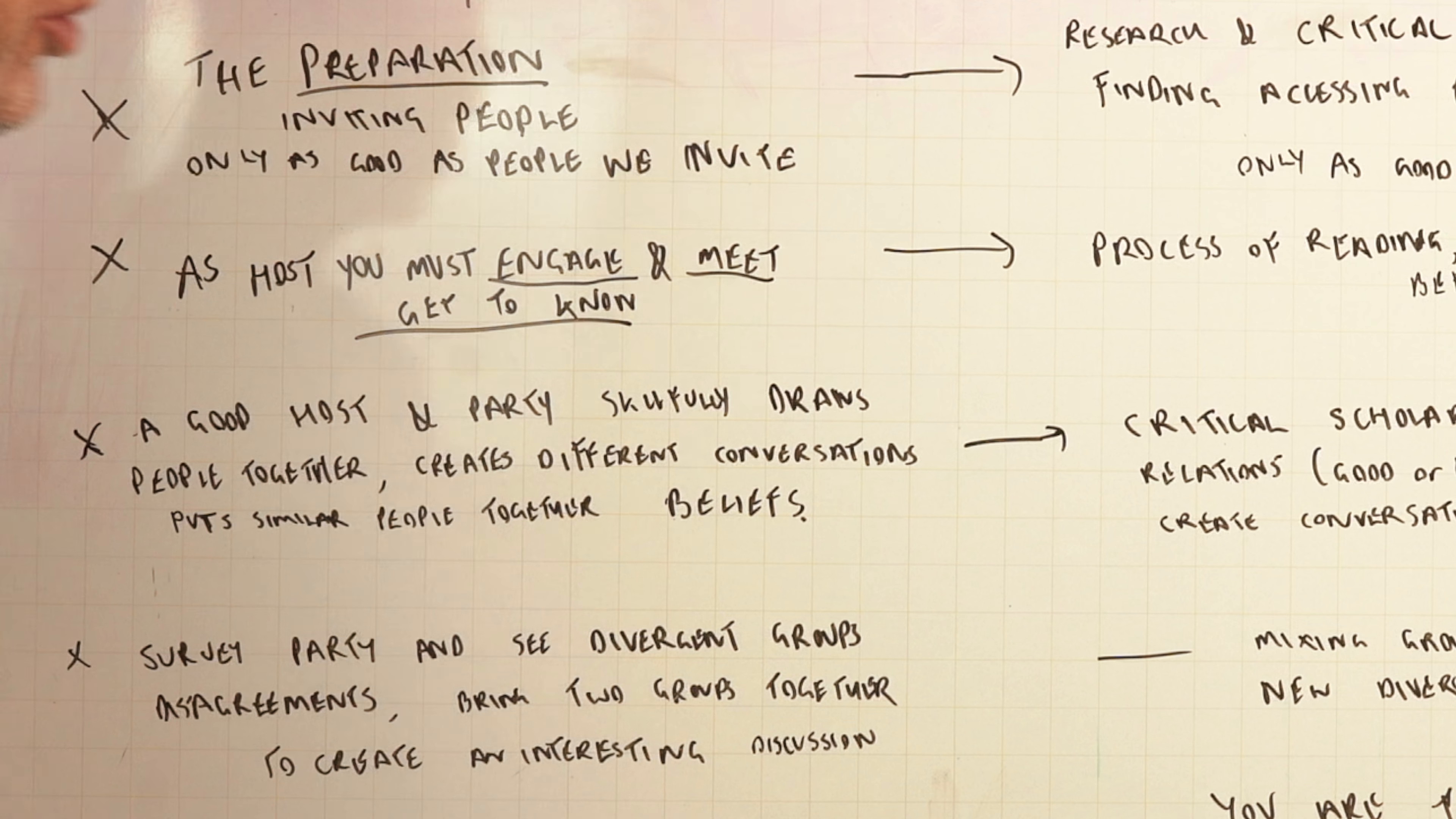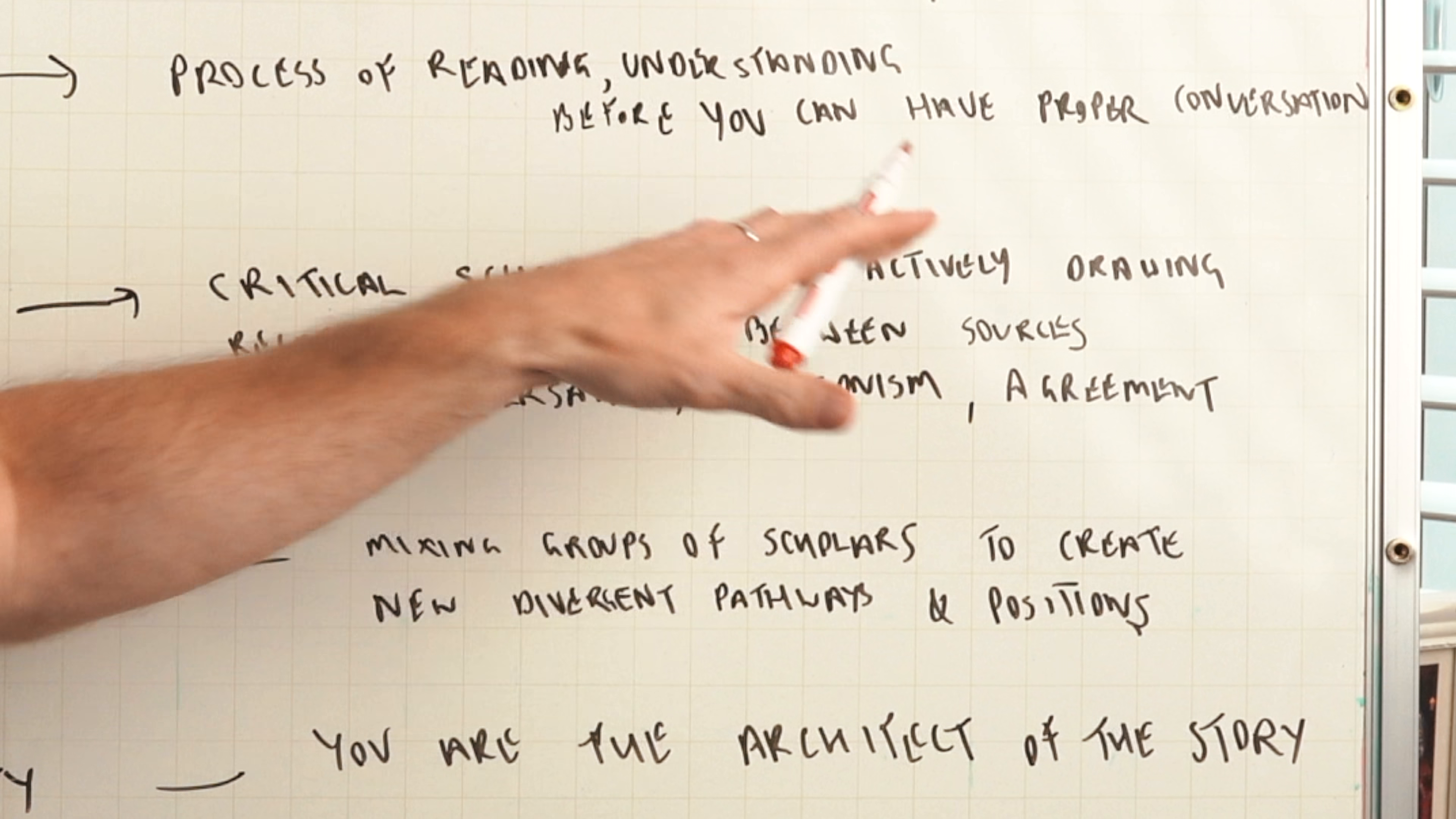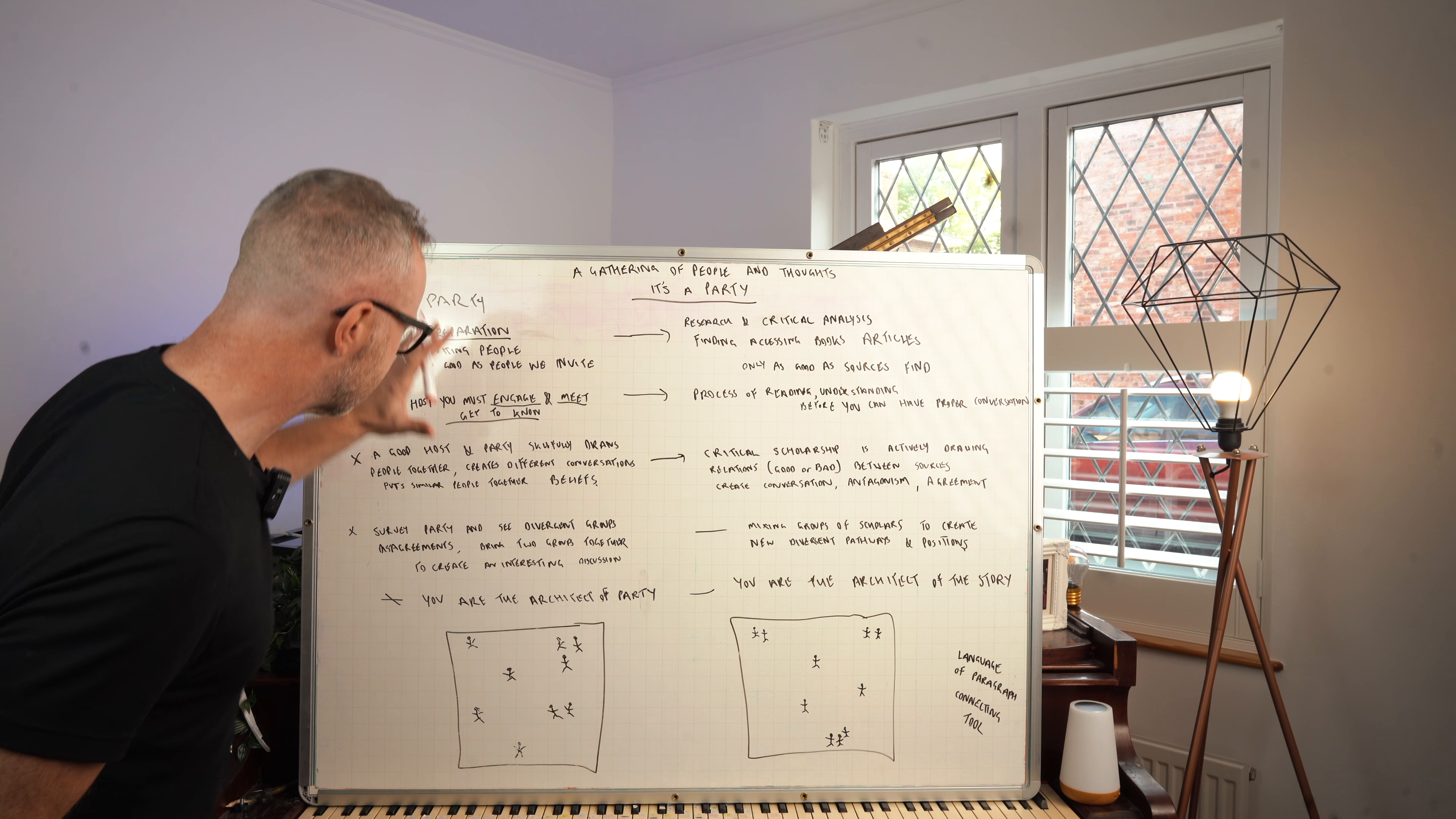Thirdly, a good host of a party skillfully draws people together and creates different conversations and puts similar people together and beliefs. We've got a room full of people who are going to be chattering. How does that relate to critical analysis? Well critical scholarship is actually drawing relations, good or bad, between sources to create conversation, antagonisms and agreement. So really similarities are there.